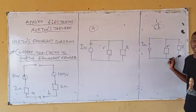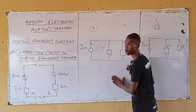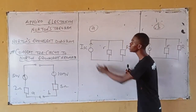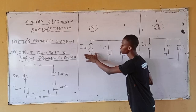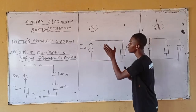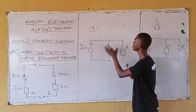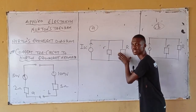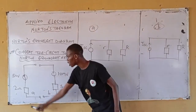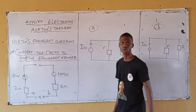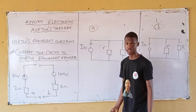Similarly for B. By Norton's equivalent diagram, what do you need? You need the ISC circuit, you need the equivalent resistor, and you need the load resistor. For A, what's my load resistor? Two.